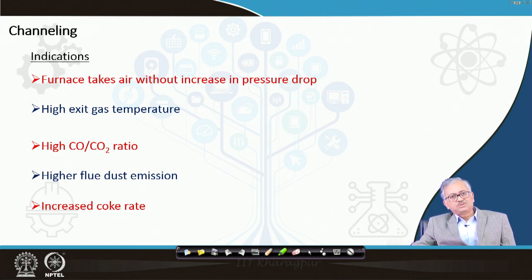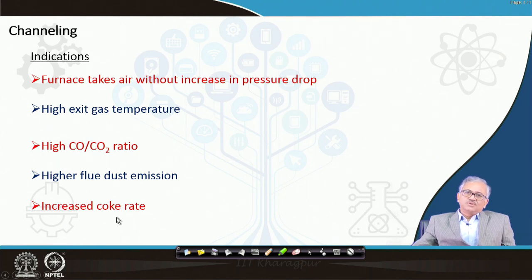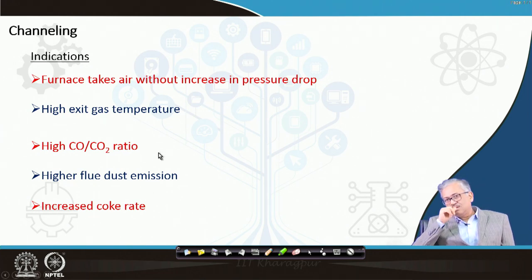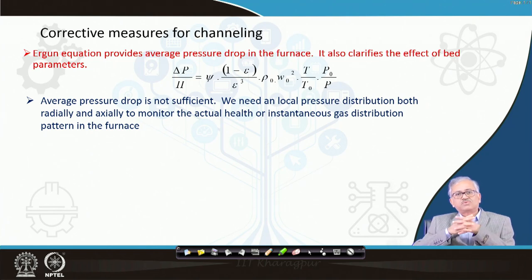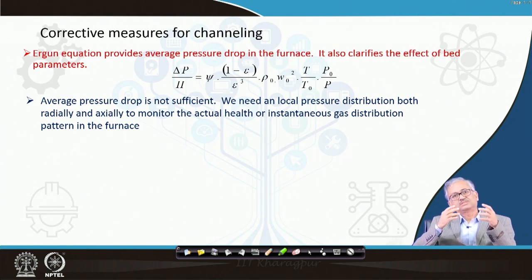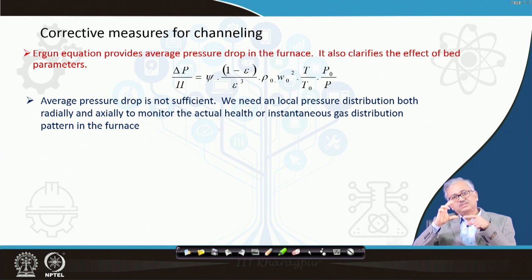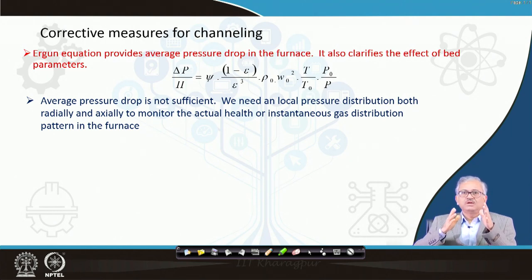High flue dust emission occurs because of fluidization. Coke rate also increases because the gas is not being utilized properly, requiring more and more coke. These are the indications of channeling; immediate corrective action must be taken. The Ergun equation gives only an average pressure drop — what we actually need is the local radial and axial distribution of pressure to monitor the instantaneous gas distribution and health of the furnace.